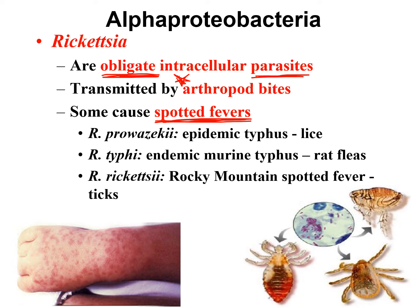The next species, Rickettsia typhi, causes murine typhus, spread by rat fleas. It is not as serious as epidemic typhus — up to sixty percent of people die from louse-borne typhus, whereas murine typhus has a much lower mortality rate. It also causes a spotted fever but you don't get as sick. The third species, Rickettsia rickettsii, causes Rocky Mountain Spotted Fever and is spread through tick bites.